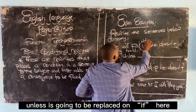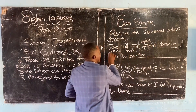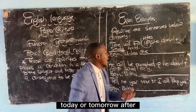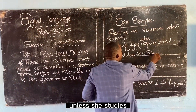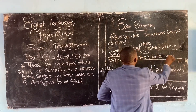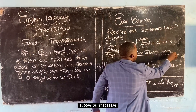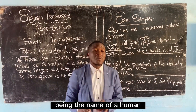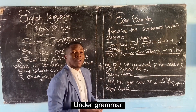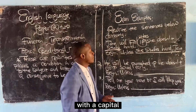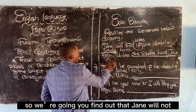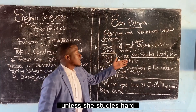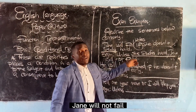When we start with 'unless,' we have to maintain positivity and then end negatively so that we avoid the consequence. Unless she studies hard — remember, we are approaching a clause, so use a comma. Then say 'Jane' — mind you, Jane is a noun being the name of a human, and a noun is always respected by starting with a capital. So: Unless she studies hard, Jane will not fail.